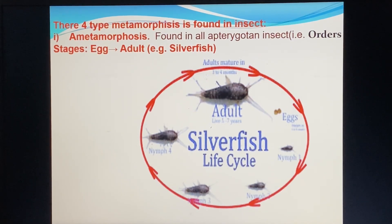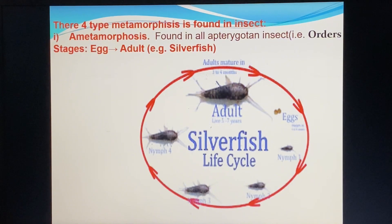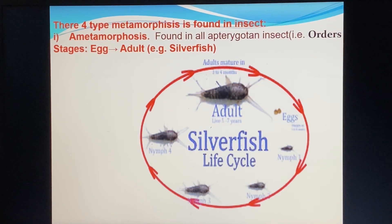The nymph and adult are similar in shape and size. This is called ametabolous metamorphosis — that is, no metamorphosis.